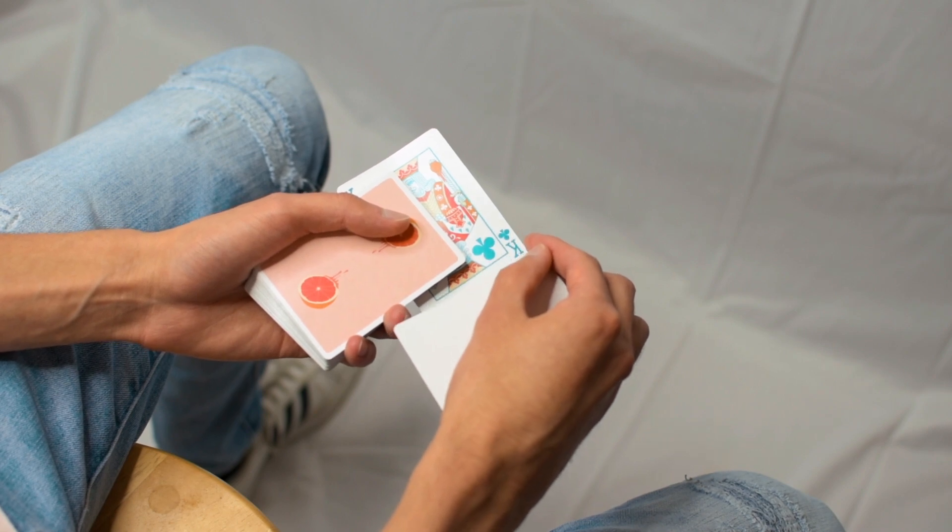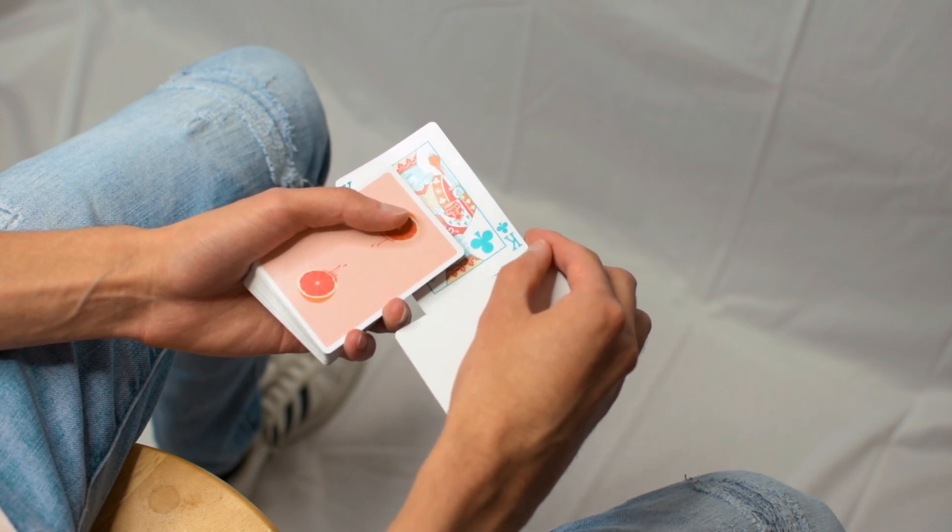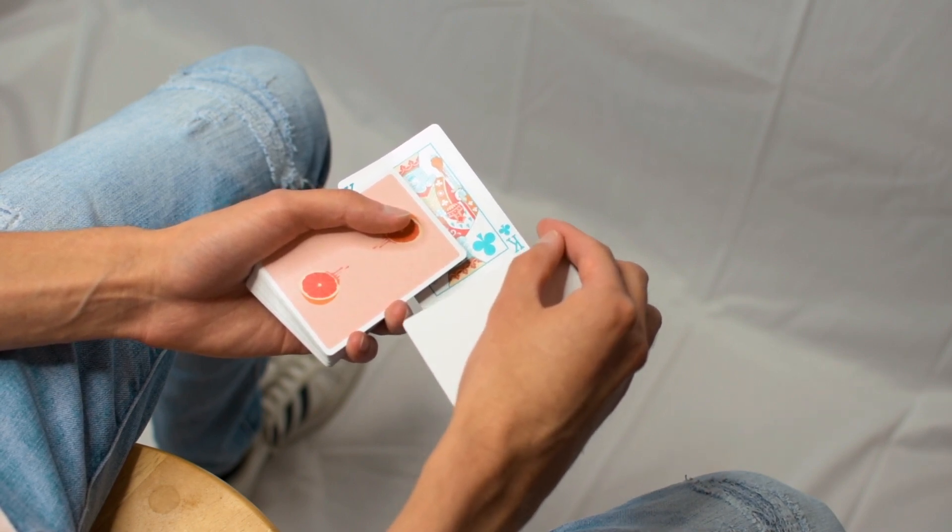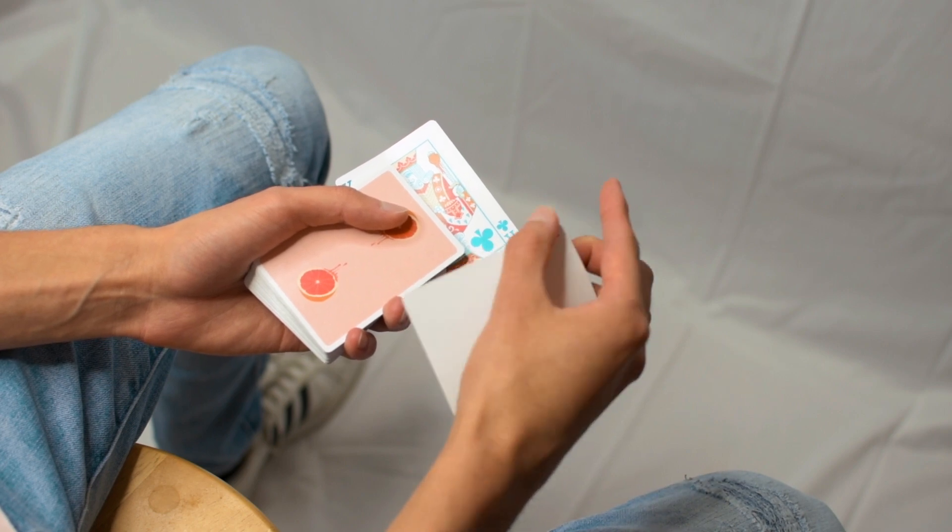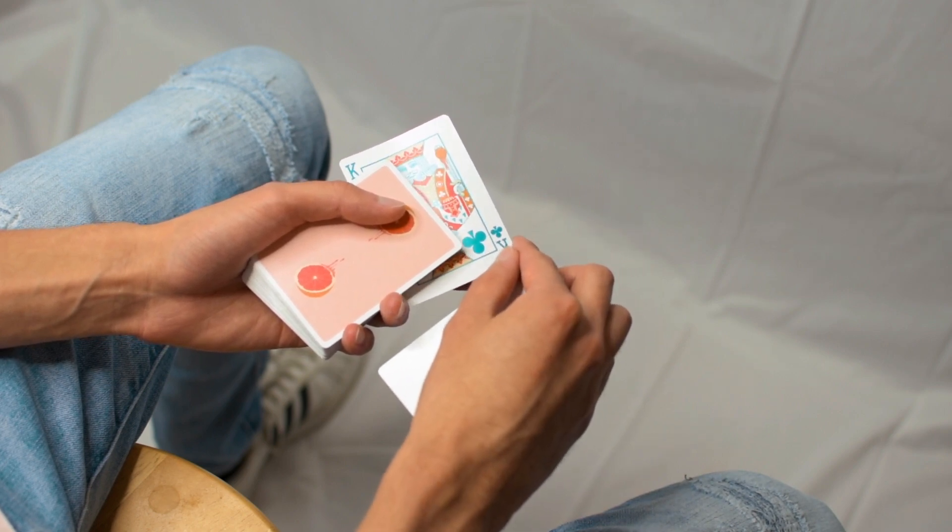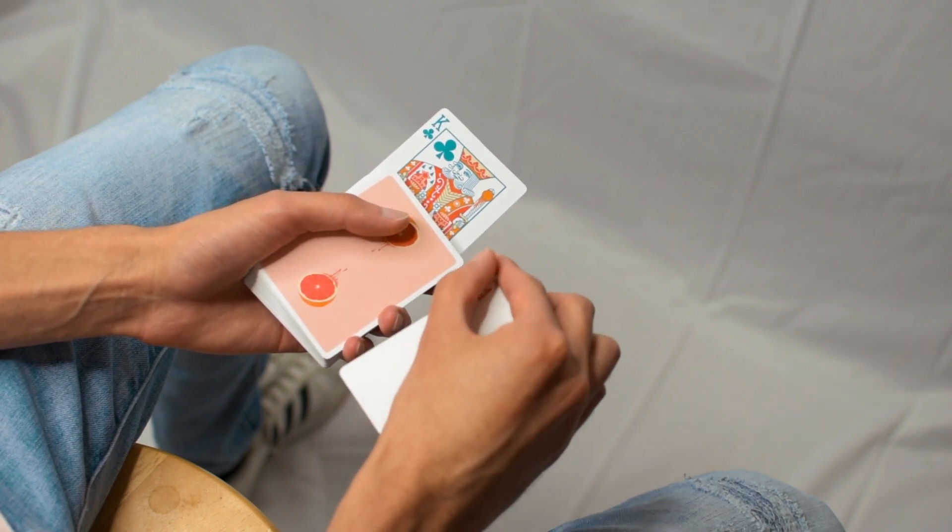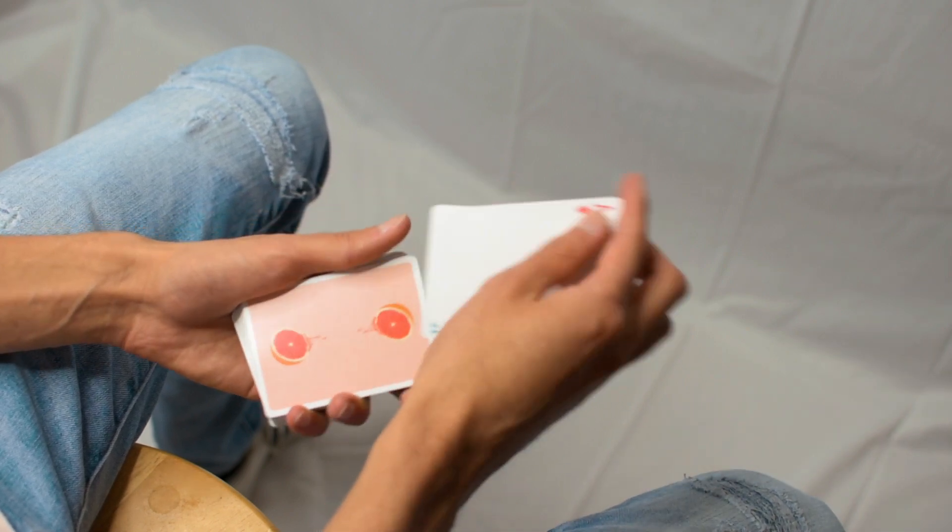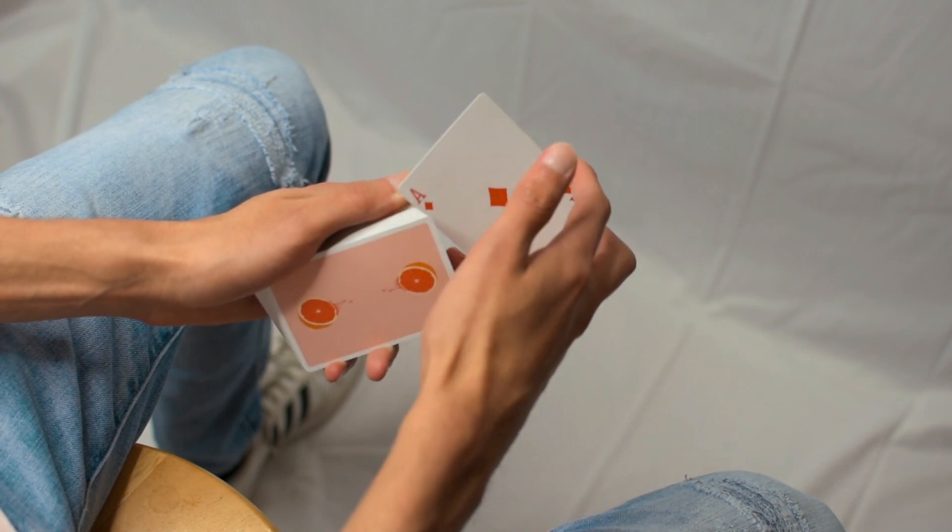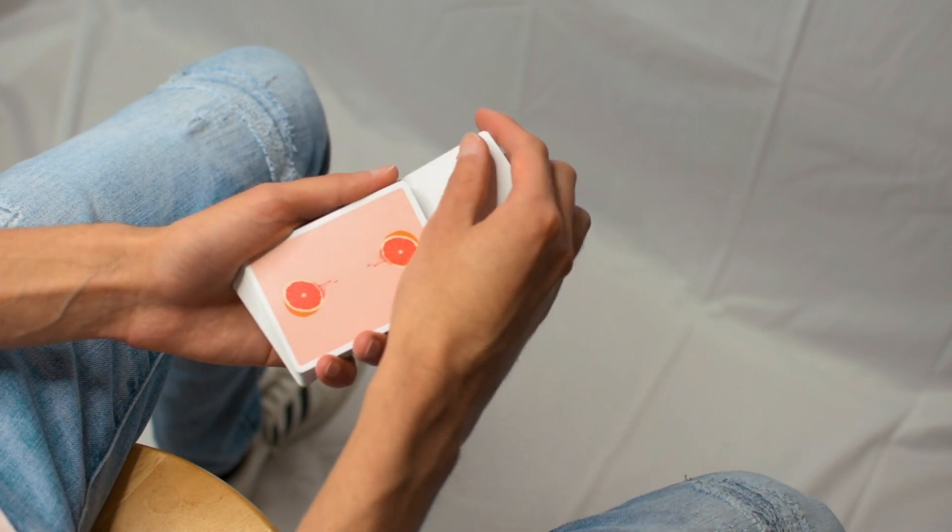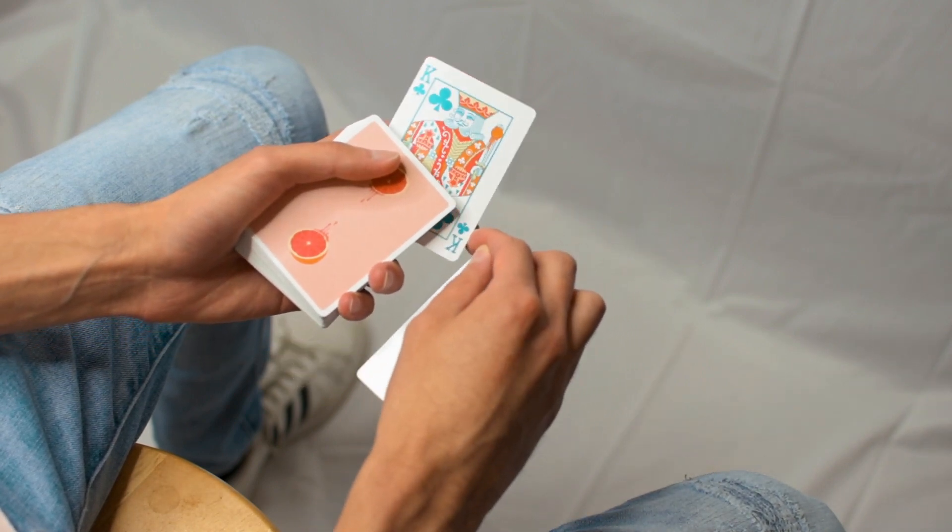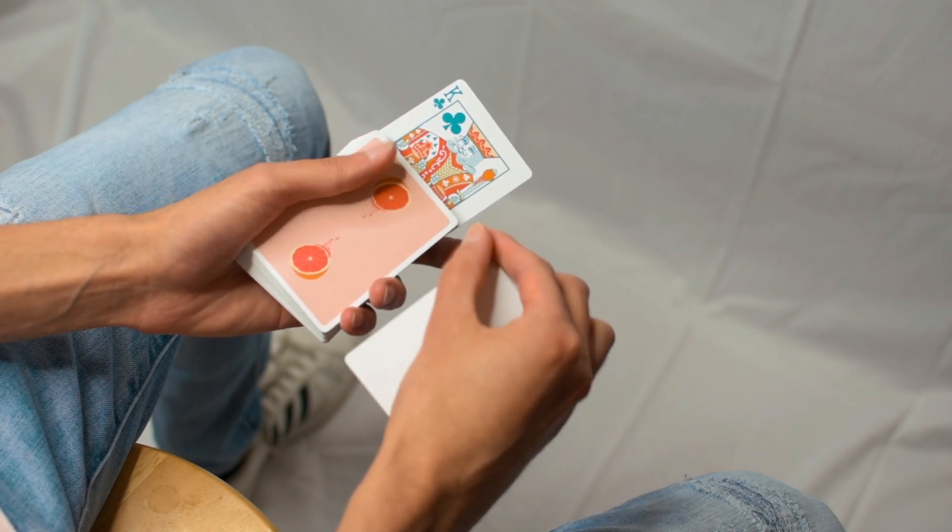About halfway through the rotation, you'll notice that the card is completely removed from the deck. As this happens, your index finger will remain in contact with the corner of the card and continue to guide it until it rotates a full 180 degrees. So, once again, the double goes in the center of the deck. Rotate it, stripping out the top card, and complete the rotation with your index finger.